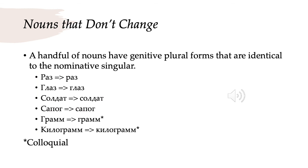And then we have nouns that don't change. There are a handful of nouns — not very many, but they are important — that have genitive plural forms exactly the same as the nominative singular. We already talked about раз, time (as in one time, two times, three times) — раз stays раз in the genitive plural. Глаз, eye, stays глаз; солдат, soldier, is солдат; сапог, high boot like a knee-high boot, stays сапог. And грамм, a gram, and килограмм, a kilogram, both remain грамм and килограмм in colloquial Russian — technically it should be граммов and килограммов, but people frequently just say грамм and килограмм for the genitive plural.